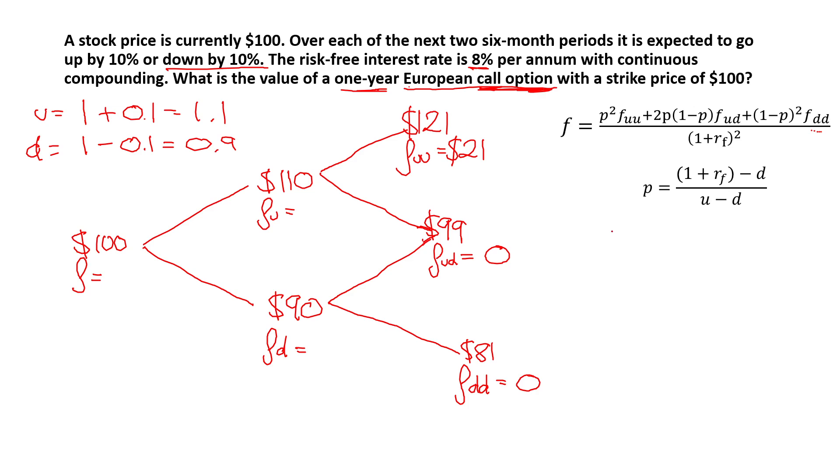Before we move on to that, let's calculate the probability. I forgot to write down that we know that the risk-free rate is 8%. Therefore, we can calculate the probability. The probability is 1 plus the risk-free rate, which in decimal places is 0.08. So 1 plus that is 1.08, minus D, which we know is 0.9, over U minus D, 1.1 minus 0.9. This would give us 0.9 when we plug it in the calculator.